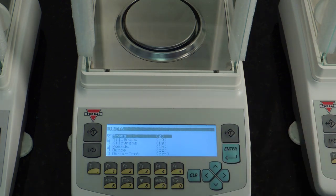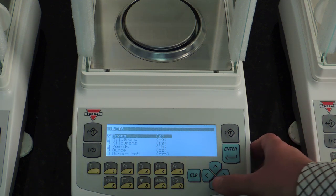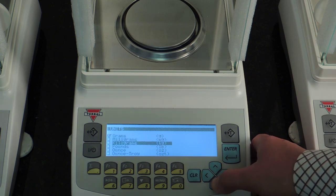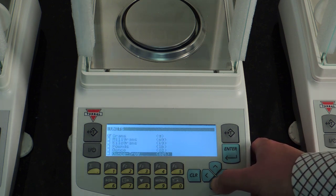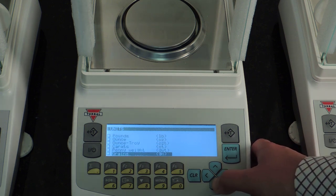We have all of the most commonly used units of measures. By default, the AGN weighs in grams, but you can have the result displayed in milligrams, kilograms, pounds, ounces, troy, carats, penny weight, and grains.